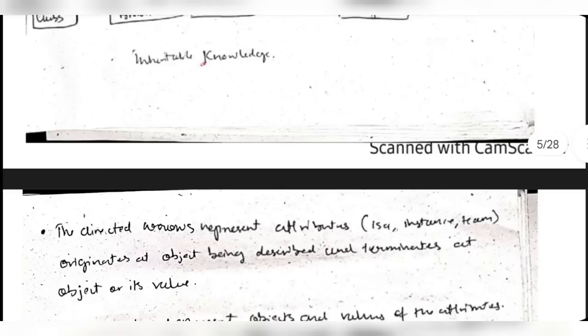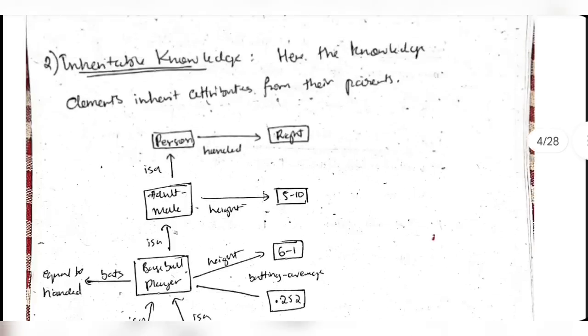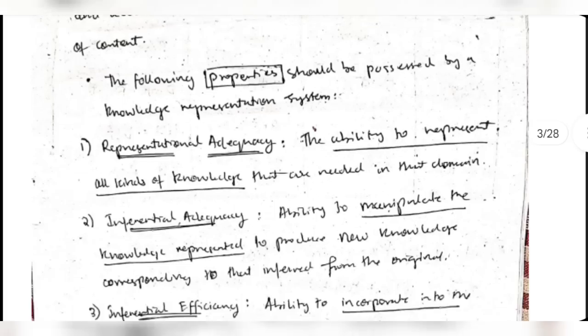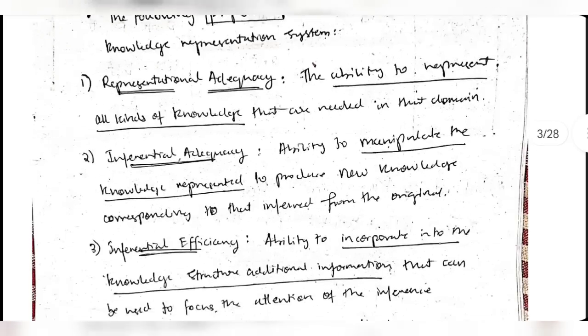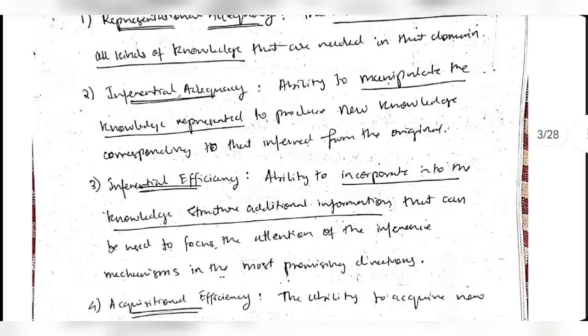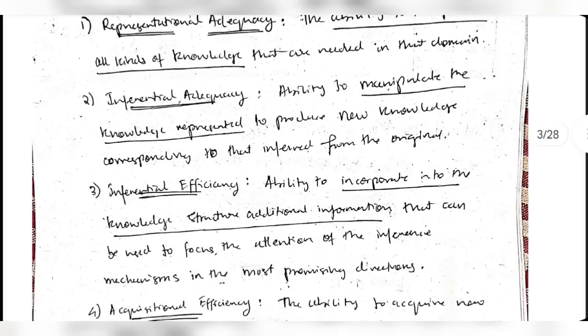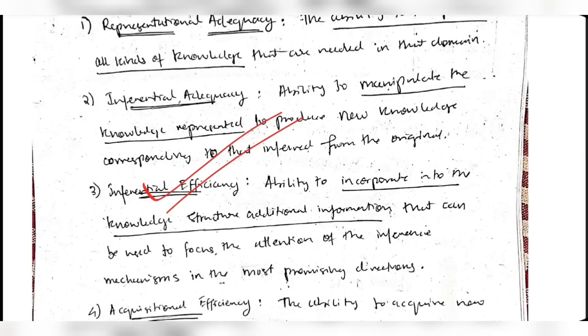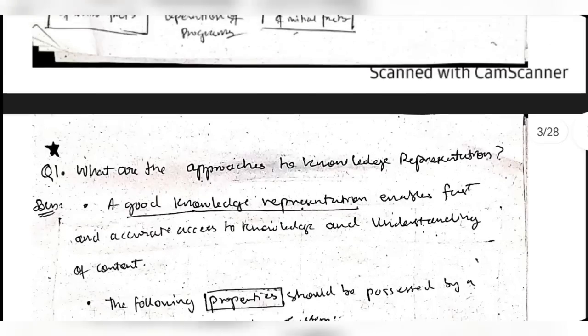So those are the four types of knowledge representation schemes. Before that, you also need to know the four properties of knowledge representation systems. That's all for this question.